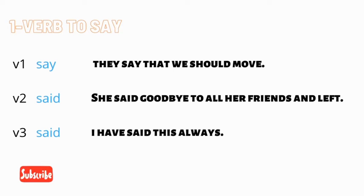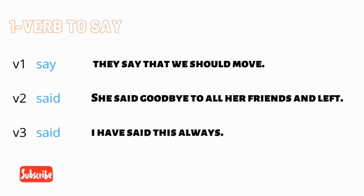Verb number one is 'to say.' The base form is 'say,' the past form is 'said,' and the past participle is also 'said.' Some examples: base form — 'They say that we should move.' Past form — 'She said goodbye to all her friends and left.' Past participle — 'I have said this always.'